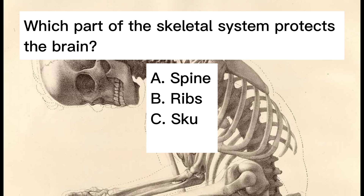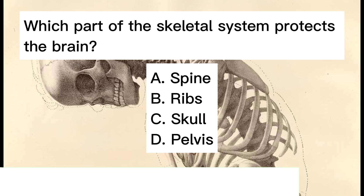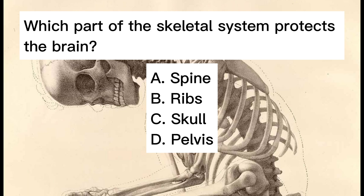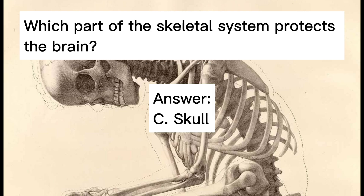Which part of the skeletal system protects the brain? A. Spine. B. Ribs. C. Skull. D. Pelvis. Answer: C. Skull.